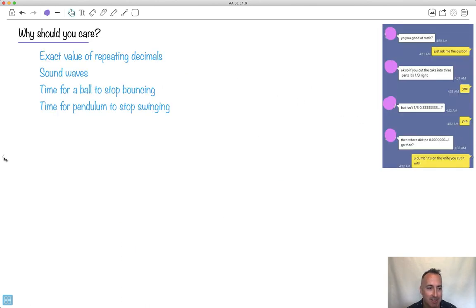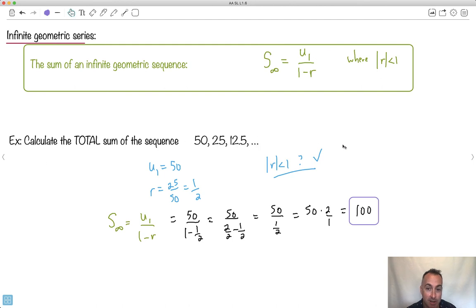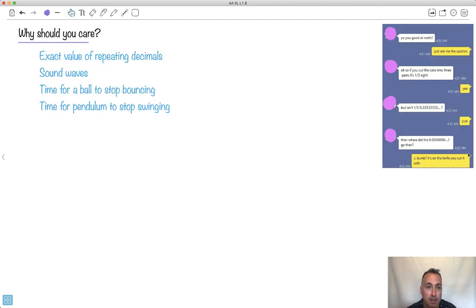So why should you care about doing this? You can add up an infinite number of terms, which is pretty neat. You can actually use this to characterize sound waves in physics. It's the time for a ball to stop bouncing. Let's say you have a ball that bounces from a certain height and goes half as high, then half as high again. You can say, how far does it travel in total? Or what's the time to stop bouncing? If you have a pendulum going back and forth, how long does it take? There's lots of examples in mathematics and in science.